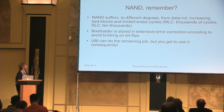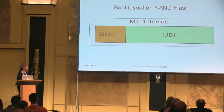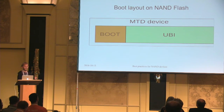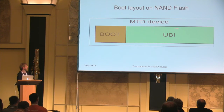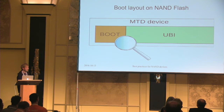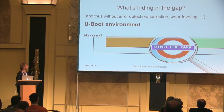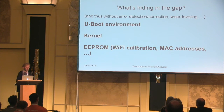So the bootloader is stored in a very extensive way, and UBI can do the remaining job. Where is the problem? The device boots, loads the bootloader, and the bootloader loads everything from UBI. That would be ideal — we deal with NAND's unfortunate properties by extensively storing the bootloader in Hamming code, and UBI does all the wear-leveling magic. However, we need to look closely, because there's something hiding in the gap.